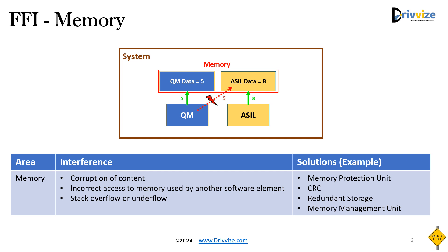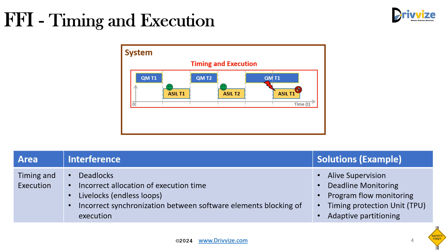To achieve freedom from interference at the memory level, we can use a memory protection unit (MPU) or memory management unit (MMU), which can monitor access violations. If we are storing a group of data, we can implement redundant storage or CRC to periodically monitor the correctness of the data.